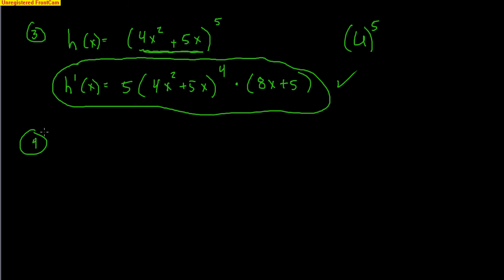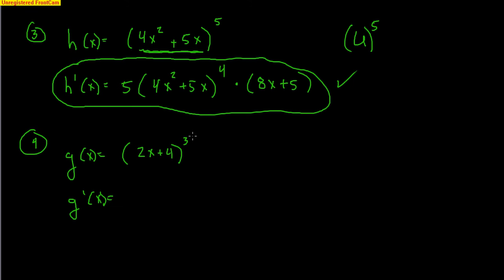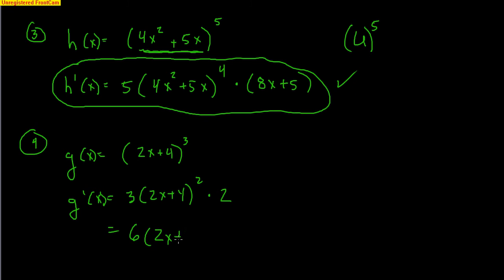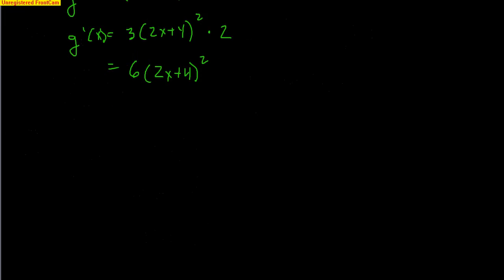Let's do several more examples. g of x equals 2x plus 4 to the 3rd. The 3 falls down in front giving 3 times 2x plus 4 squared — just use the power rule — then multiply by the derivative of the inside, which is 2. So 2 times 3 gives 6, and the answer is 6 times 2x plus 4 to the 2nd. Easy.